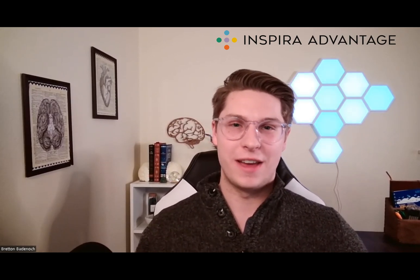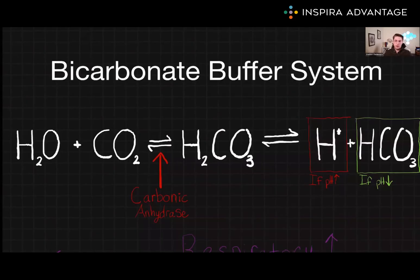Hello, I'm Breton, one of the MCAT tutors here at Inspira Advantage, where we help students get into med school and other professional programs. Today we're going to talk about three important systems found in the circulatory system: the bicarbonate buffer system, blood type, and the basics of coagulation. Let's jump on in.